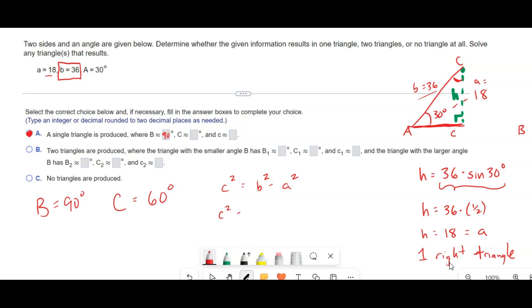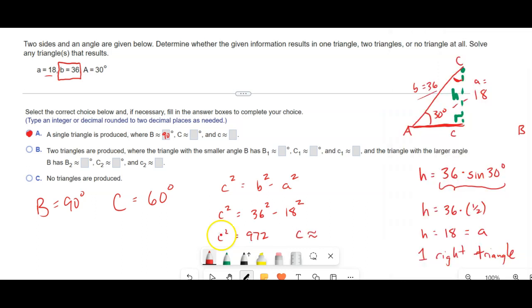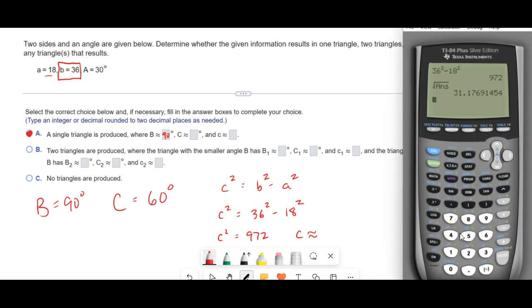So c squared is equal to B squared, which is 36 squared, minus 18 squared. 36 squared minus 18 squared is 972. So c is approximately 31.18.